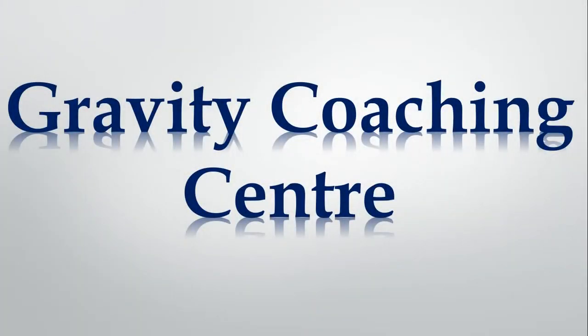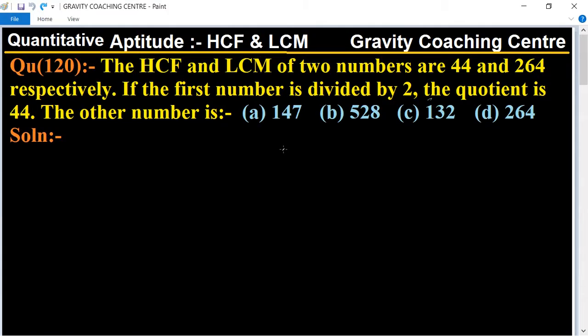Welcome to our channel Gravity Coaching Centre, quantitative aptitude chapter HCF and LCM. Question number 120: The HCF and LCM of two numbers are 44 and 264 respectively. If the first number is divided by 2 and the quotient is 44, so the other number is which one? In this question, the HCF and LCM are given.